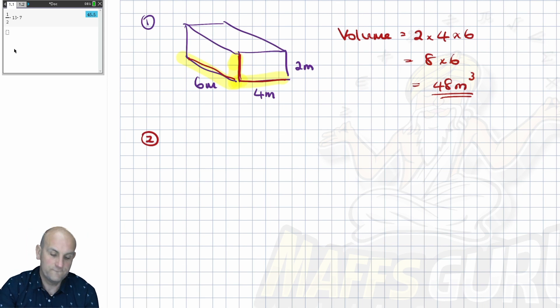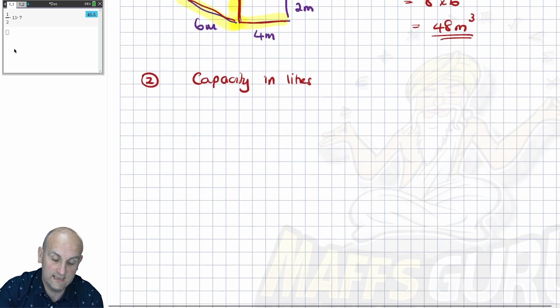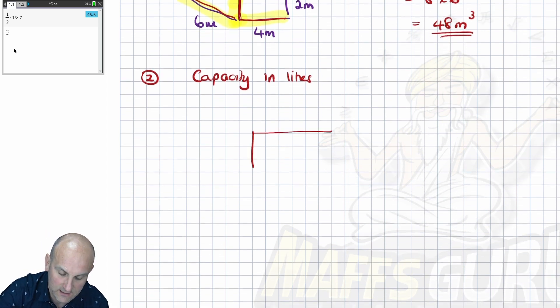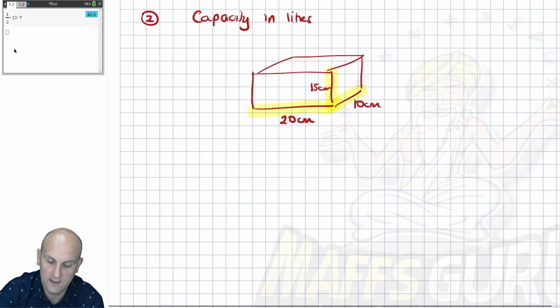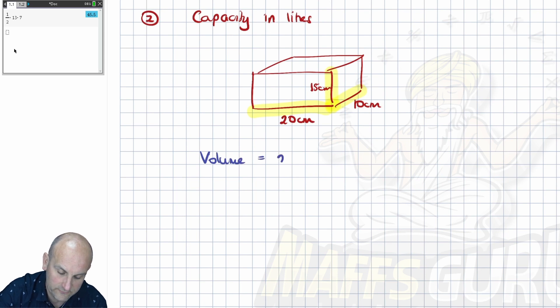So, the next question is, find the capacity. This is a worded question. Find the capacity in liters of a container that is a rectangular prism. So, it's a rectangular prism. I'm just going to draw a random rectangular prism that is 20 centimeters long. It is 10 centimeters wide. I'm just going to arbitrarily write that 10 centimeters, and 15 centimeters high. Find the capacity. So, there is my point. I'm going to do this, times this, times this. Moving it up just a little bit. So, the first thing I'm actually going to do is work out my volume.